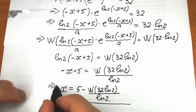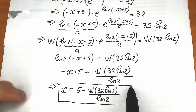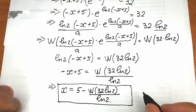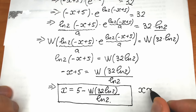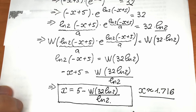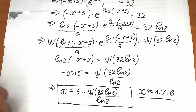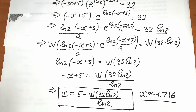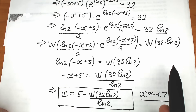Maybe someone is interested in the approximate answer. If you're on an exam without a calculator, the exact form x = 5 − W(32·ln2)/ln2 is your final answer — it's a constant. But if you can use resources, x is approximately equal to 1.716. This was a great question to practice Lambert W function, quite different from basic cases like 2^x = 3x^3.